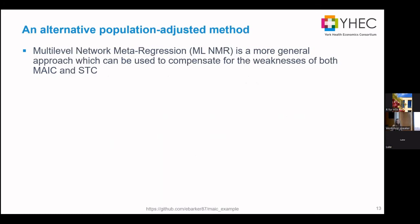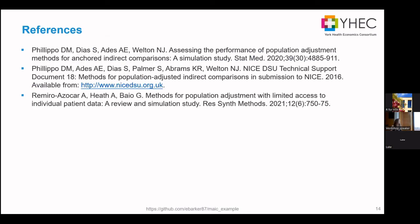I'll end by mentioning multi-level network meta-regression (MLNMR). It's a newer method looking to compensate for some of the weaknesses in MAIC and STC, and may be the way forward for indirect treatment comparisons. However, it still can't handle scenarios where there's no common comparator, so we may still need to revert to these methods. There are lots of different tools to consider, references are provided, and the code is available on GitHub at the bottom of the presentation.